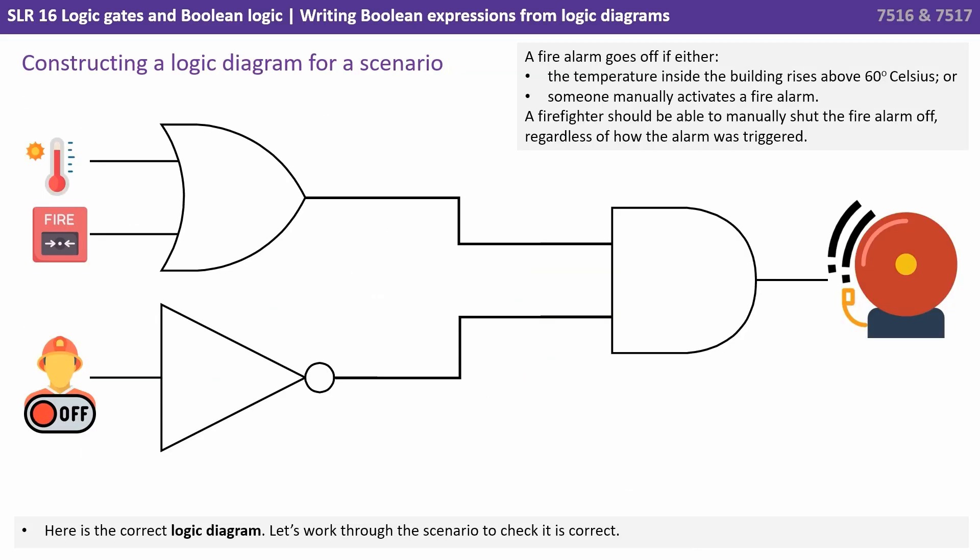What we've got here is a fire alarm goes off if either the temperature inside the building rises above 60 degrees Celsius or someone manually activates a fire alarm. A firefighter should be able to manually shut the alarm off regardless of how the alarm was triggered.